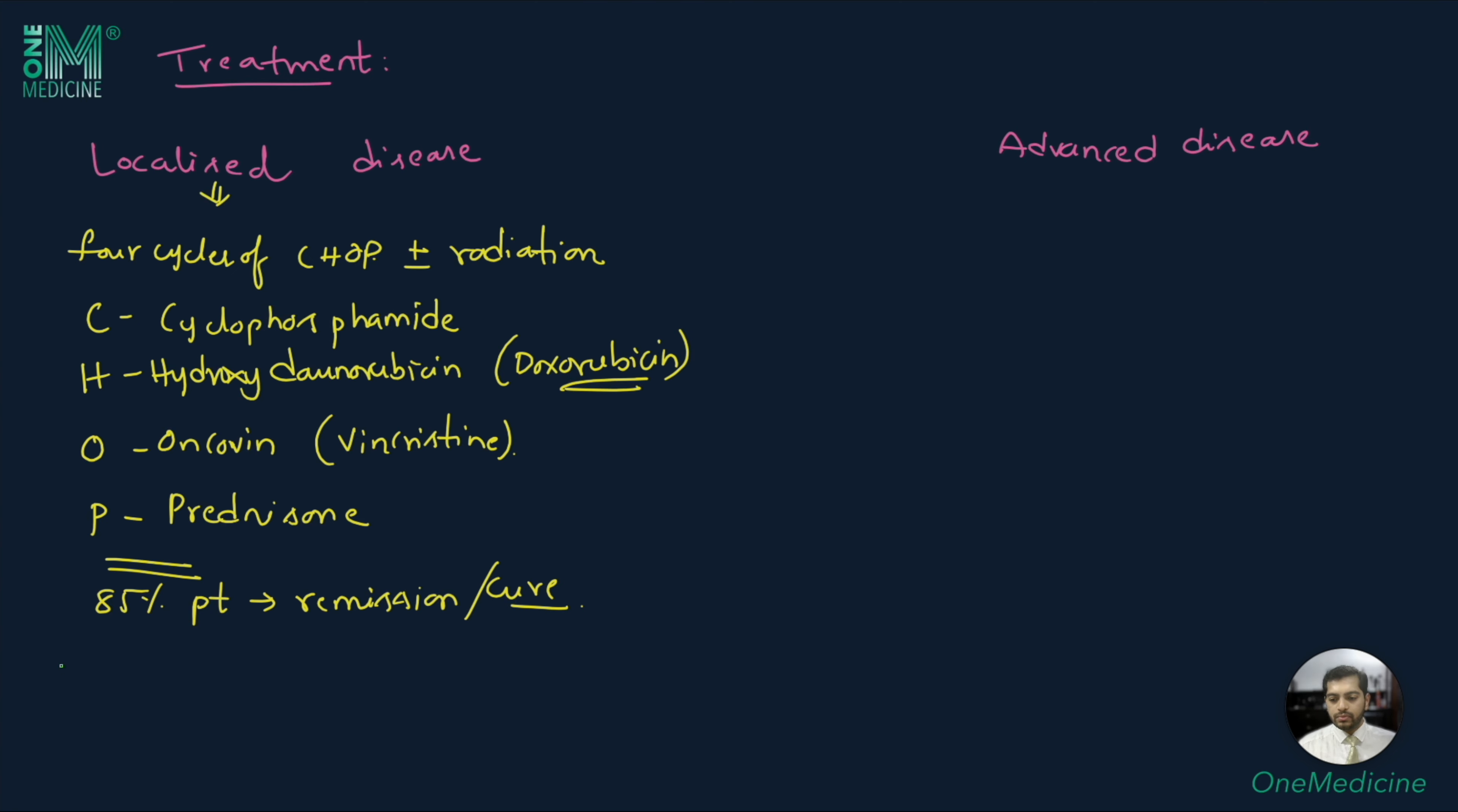Studies have shown that instead of radiation, if rituximab is used, the remission rates are higher. This regimen is called R-CHOP, where R is rituximab, C is cyclophosphamide, H is hydroxydaunorubicin or doxorubicin, O is Oncovin or vincristine, and P is prednisone.